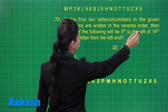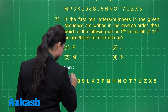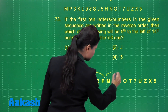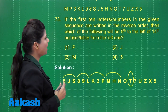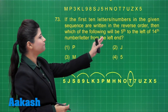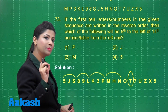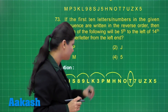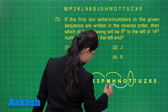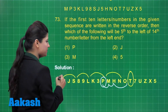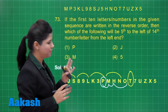Next, obtain the 14th letter or number from the left end. Counting through — three, six, nine, twelve — T is the 14th letter from the left end. Now you need to obtain the fifth letter to the left of this 14th letter. Counting leftward — three, four, five — P is the required letter lying fifth to the left of the 14th letter.